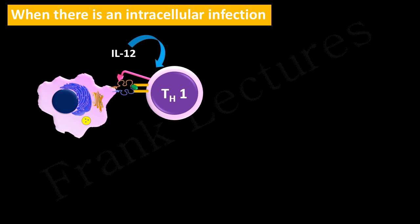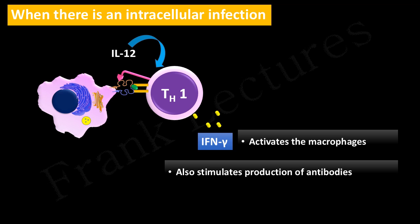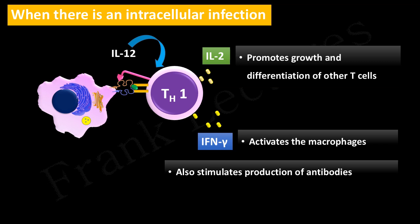This T helper type 1 cell now starts secreting interferon gamma. Interferon gamma activates the macrophages and enhances their microbicidal activity to kill ingested bacteria. Interferon gamma also stimulates the production of antibodies that promote phagocytosis of microbes, since these antibodies act as complement proteins. Recall that complement proteins enhance phagocytosis by a process known as opsonization. Besides interferon gamma, these T helper type 1 cells also produce interleukin-2, which promotes growth and differentiation of other T cells.